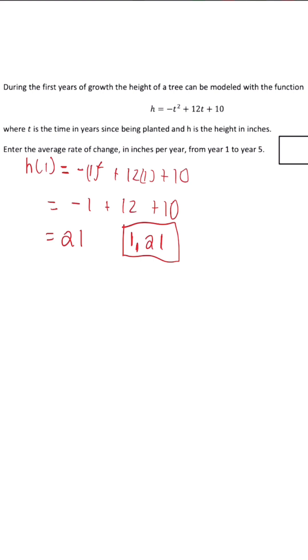Now when we repeat this process with 5, we're going to have h of 5 is equal to the opposite of 5 squared plus 12 times 5 plus 10.